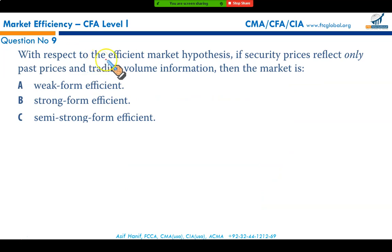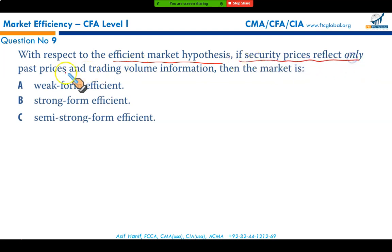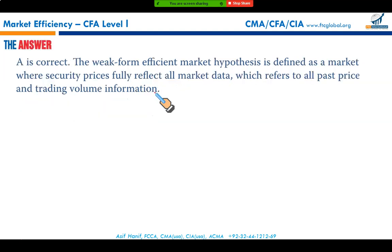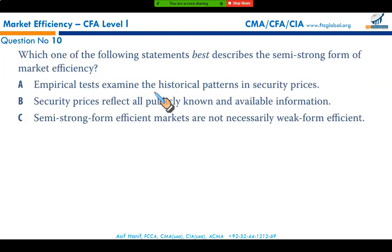With respect to the efficient market hypothesis, if security prices reflect only past prices and trading volumes, then the market is weak form efficient. This is a straightforward question, and option A is the correct result.